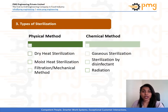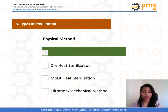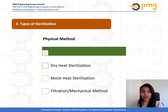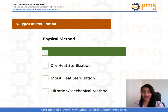The two major classes into which sterilization methods are divided are physical and chemical methods. Looking first into the physical method, this includes dry heat sterilization, moist heat sterilization, and filtration.